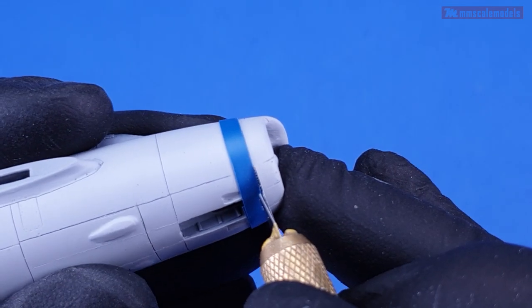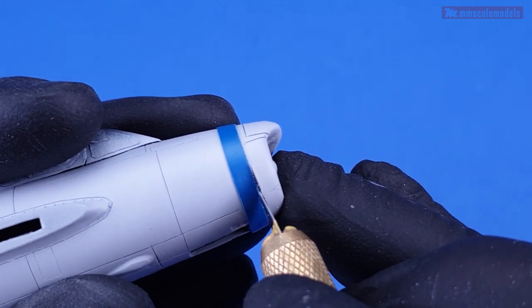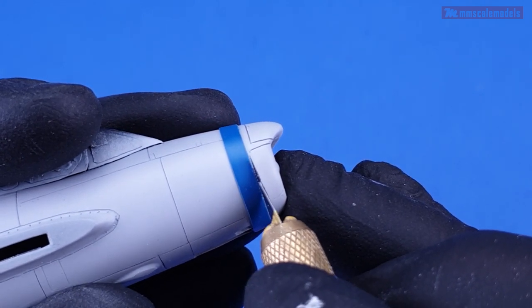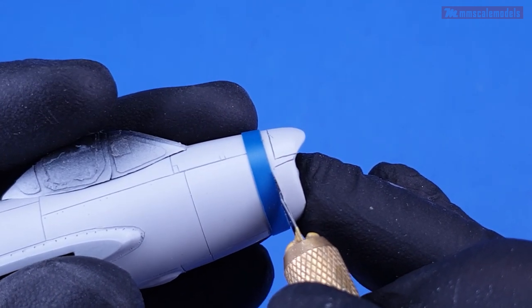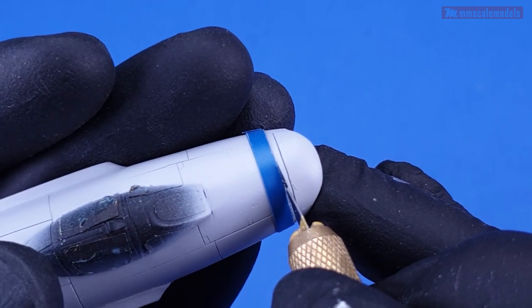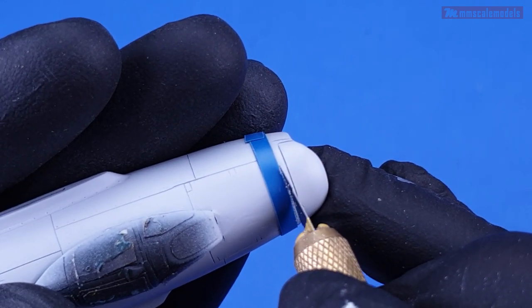Using 3mm wide vinyl tape wrapped around the nose I will guide the Tamiya scribing saw to reinstate the panel line that marks the joint between the nose cone and the fuselage. I opted to use this tool instead of the MRP scriber due to the variety of materials underneath the primary layer.